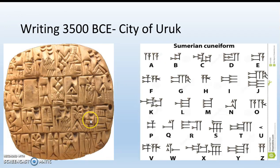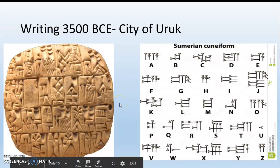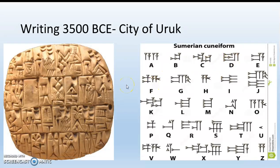We have the first writing, called cuneiform — C-U-N-E-I-F-O-R-M. This is a cuneiform tablet: heated clay with carved symbols representing letters and words. This is a loose translation of cuneiform letters into Phoenician letters, which is what we use today — A, B, C, D, and so on. Cuneiform was invented in 3500 BCE in the city of Uruk.